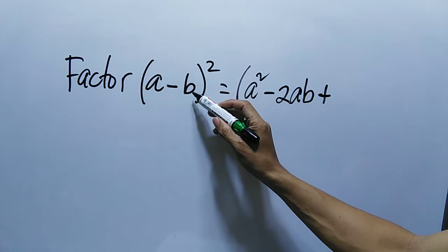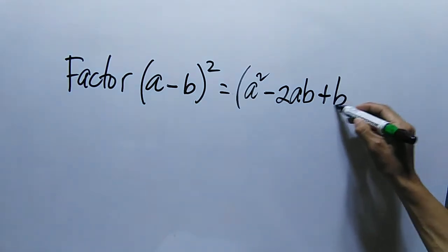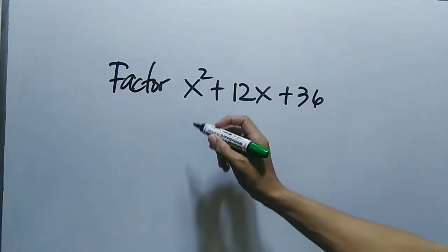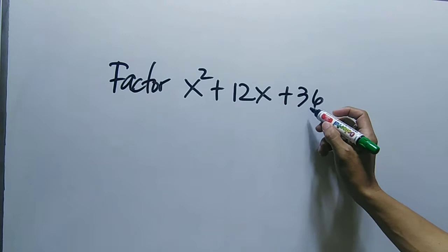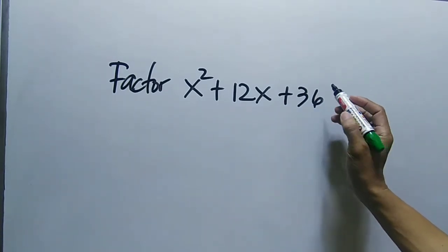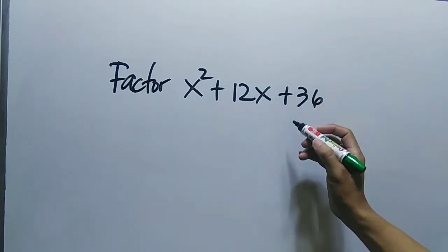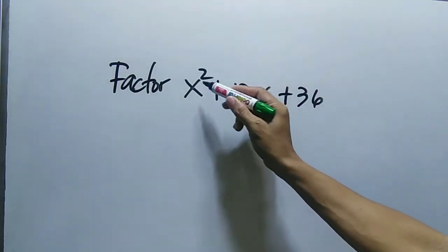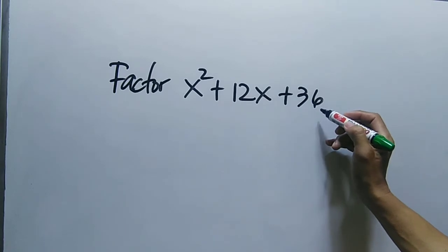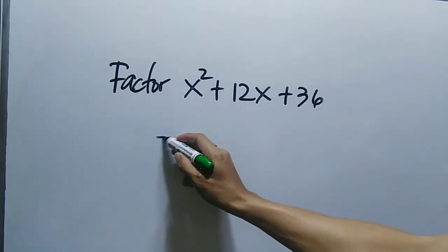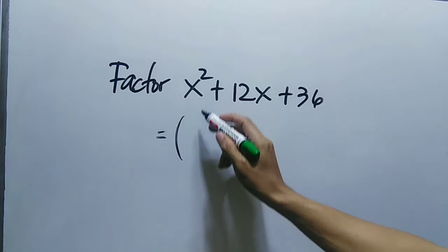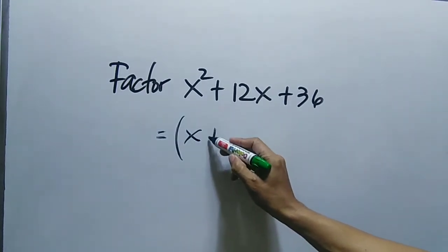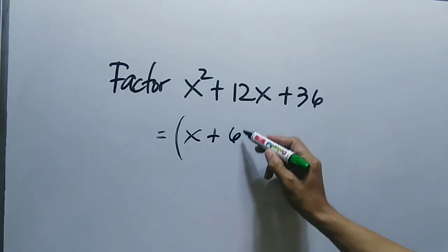We will factor x² + 12x + 36. This factoring is a perfect square trinomial. What we do is take the square root of the first term and the square root of the last term. The square root of x² is x, and since it is positive, plus. The square root of 36 is 6, then we square the binomial.